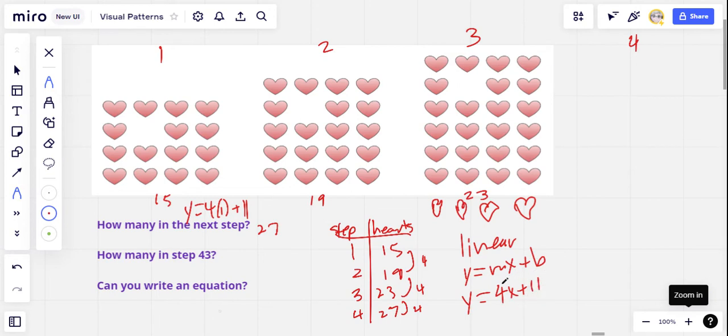So I'm going to just try adding 11 to our equation. So now we've got y equals 4x plus 11. Let's try this with step number two. I know it works with step number one. So y equals 4 times step number two plus 11.